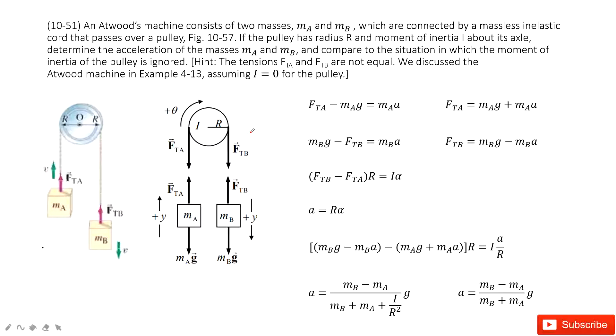Chapter 10 is about rotational motion. In this problem, we talk about Atwood's machine. An Atwood's machine, you can see there is a pulley, and it has two objects, A and B.